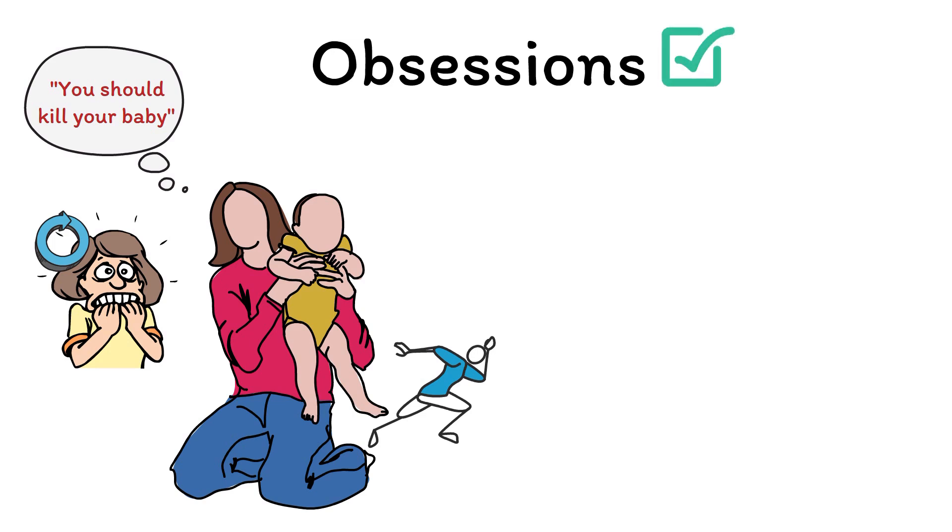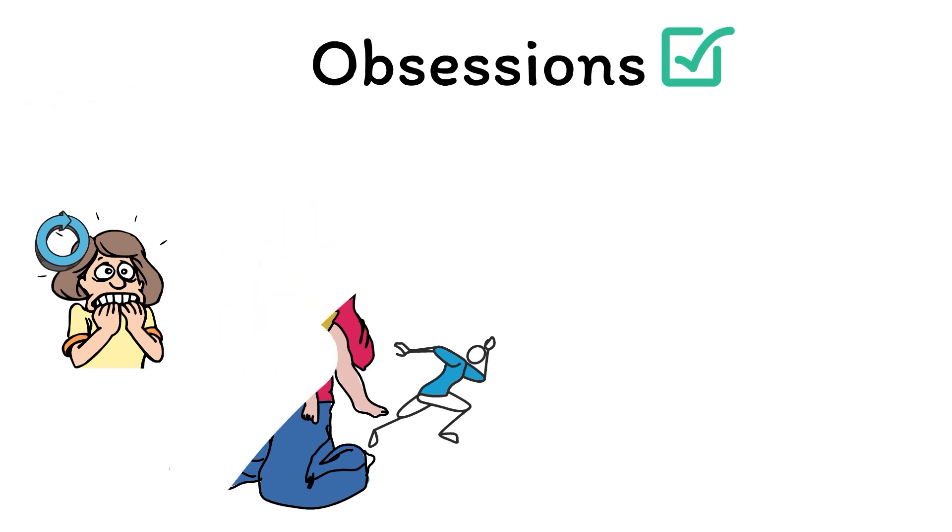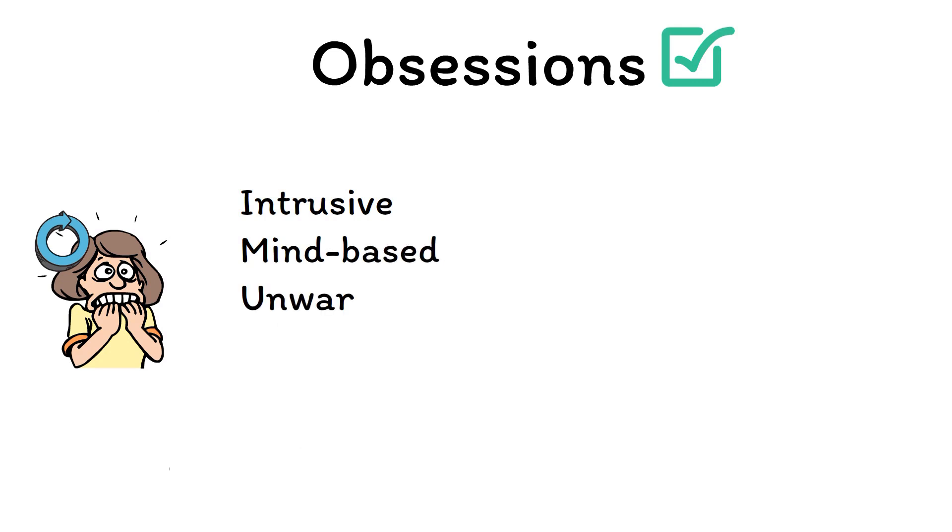Let's go back through this story and use it to illustrate each of the characteristics of obsessive thoughts. Specifically, obsessive thoughts are intrusive, mind-based, unwanted, resistant, distressing, ego-dystonic, and recurrent.